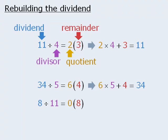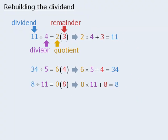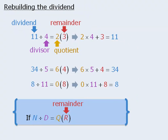Let's try one more. Since 8 divided by 11 equals 0 with remainder 8, it must also be true that 0 times 11 plus 8 is equal to 8. In general, if n divided by d equals q with remainder r, then it must also be true that q times d plus r is equal to n.